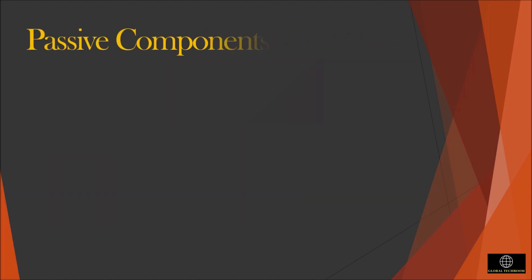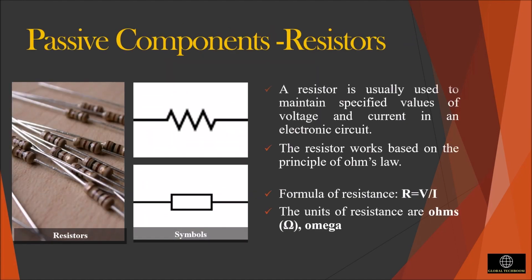Let us discuss about the component resistor. It is the most commonly used component in the electronic circuit and devices. A resistor is usually used to maintain specific values of voltage and current in an electronic circuit. It works based on the principle of Ohm's law, which states that the voltage across the terminals of the resistor is directly proportional to the current flowing through it.